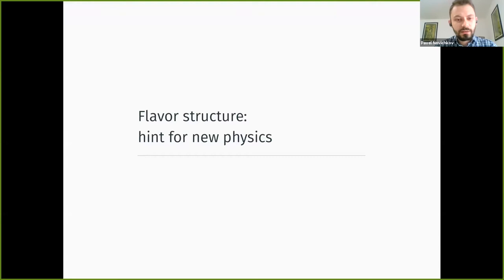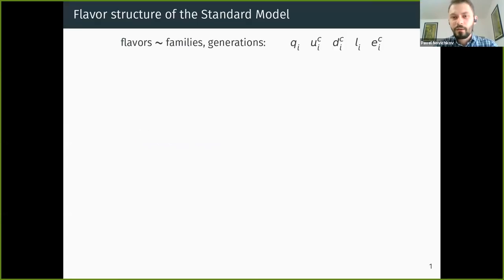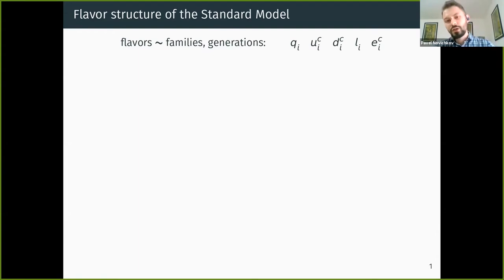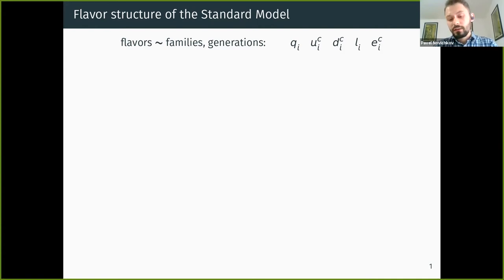Let me start with the first point and discuss the flavor structure as a hint for new physics. In the standard model there are five fermions which were copy-pasted three times — each fermion comes in three families or generations of flavors which interact the same way. They have the same representations, but for some reason there are three copies of each of them, and this is a long-standing problem in particle physics referred to as the flavor problem or family problem.